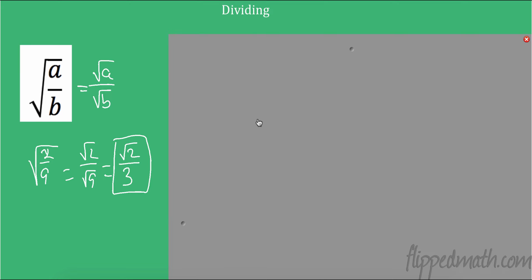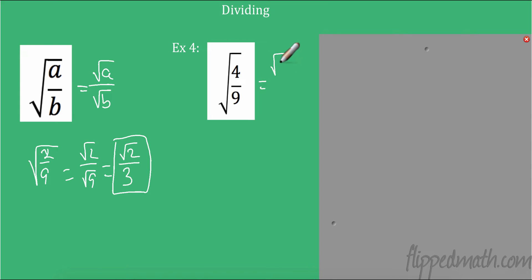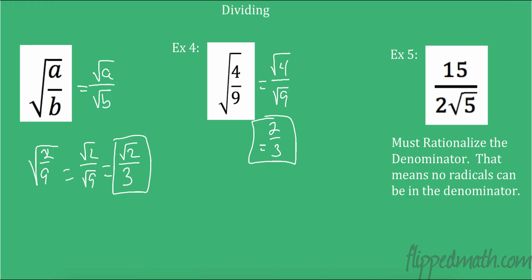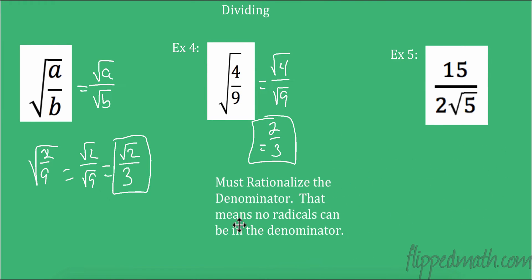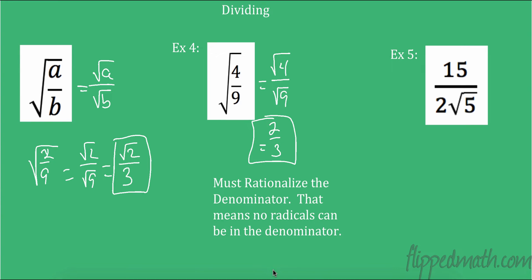We can also do the square root of 4 over the square root of 9. The square root of 4 is 2, and the square root of 9 is 3 — easy. It does get more complicated though. There's a rule in math called rationalizing the denominator. What rationalizing the denominator means is that there are no radicals allowed in the denominator. The square root of 4 over square root of 9 gave us 2 over 3 — no radical in the denominator, that's fine.